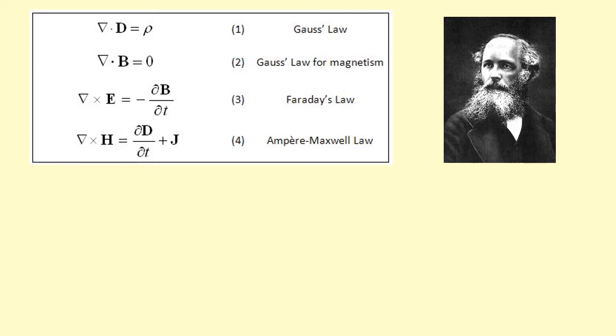These are Maxwell's equations of electromagnetism. When he combined them for free space, he found that they predicted the existence of something called an electromagnetic wave.